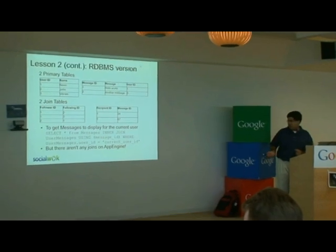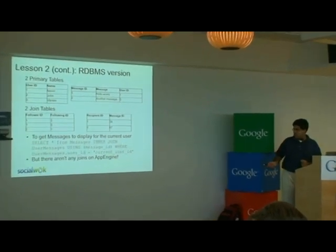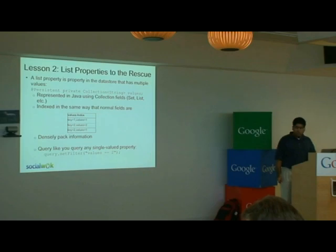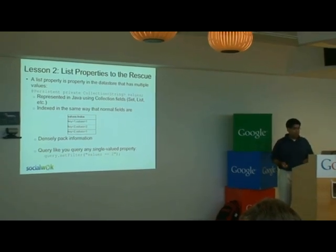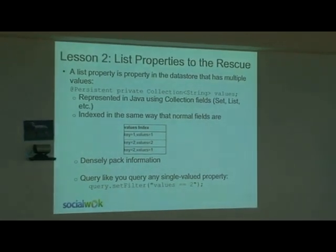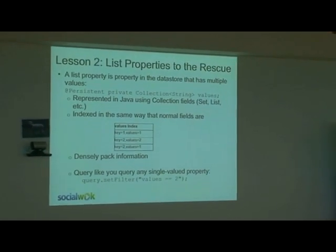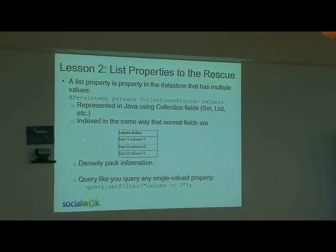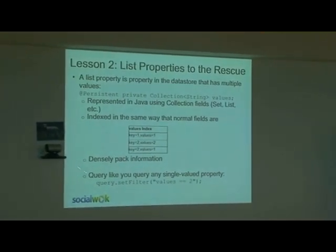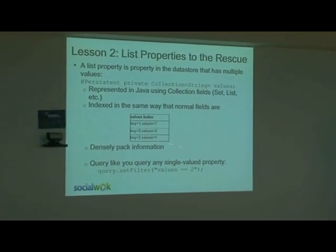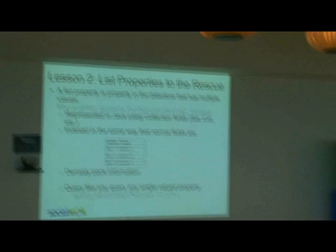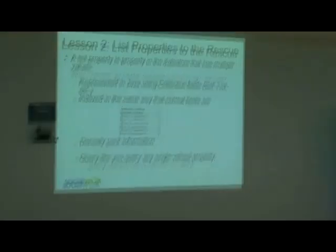There aren't any joins on App Engine. But I need to accomplish this on App Engine because I want to scale my app. There's one special type of property in App Engine that is very, very useful for this: it's called a list property. A list property is a property that has multiple values — just like any other property, except in the index you see two, three, or four entries for it instead of one. You can densely pack information and query it just like any other single-value property. This gives you a very powerful syntax to deliver these messages.